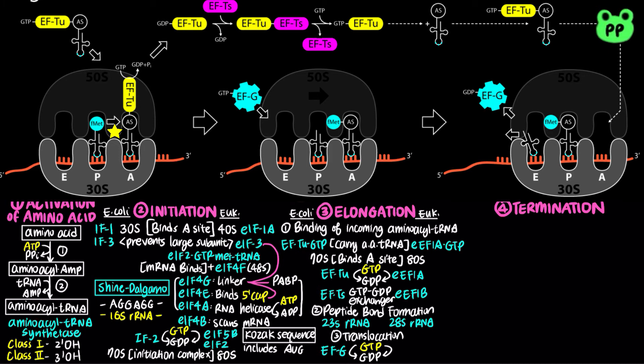During translocation in eukaryotes, eukaryotic elongation factor 2 (eEF2) binds to the ribosome, hydrolyzing GTP to facilitate translocation of peptidyl-tRNA to the P site and the dissociation of uncharged tRNA from the E site.